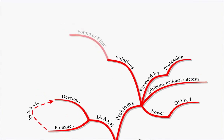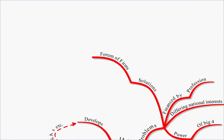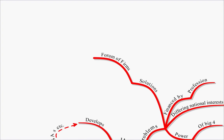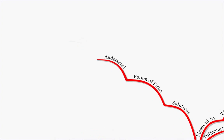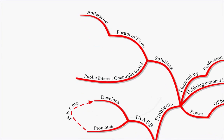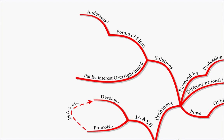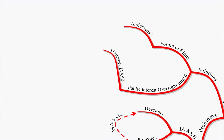What are the solutions to these problems? Well, first of all there was the Forum of Firms, which sought to seek the input of the large accountancy firms. However, the collapse of Andersen created a problem with this. So in 2005 the Public Interest Oversight Board was set up, and it really focuses on overseeing the IAASB.